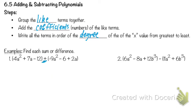So we're going to add these together. We're going to do the same thing we just got done doing, where we're going to underline what would go first, second, third, fourth, so on and so forth.